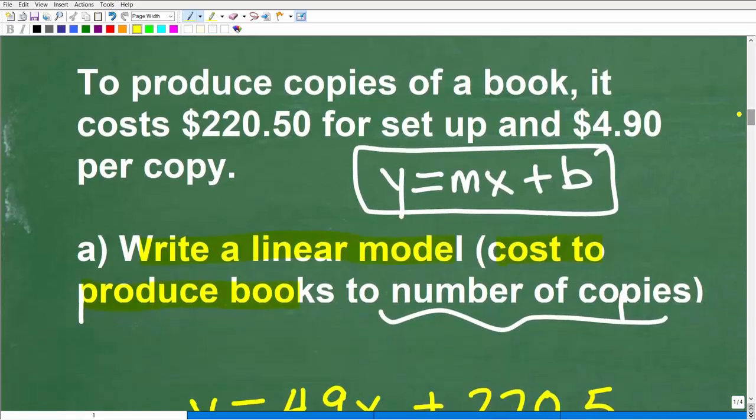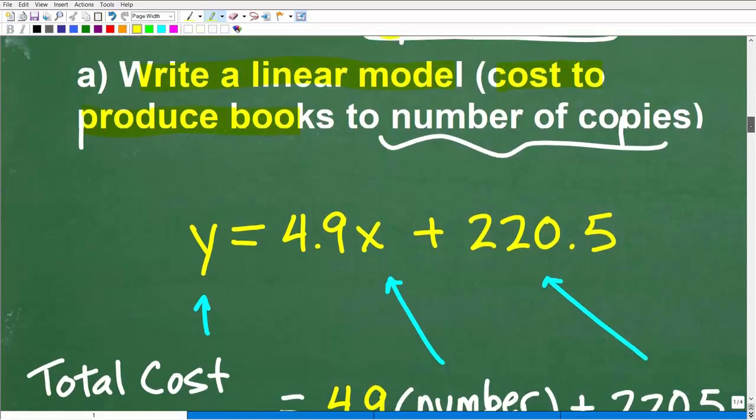So how do we want to think about this particular situation? Our input is the number of books we want to produce. And then our output variable, which of course would be our y variable, is the cost of doing so, in dollars. So x will represent the number of books, and y would be in dollars, the total cost in dollars. So you have to be specific about this. Different ways you can do this. But I'm trying to keep it simple for this particular example.